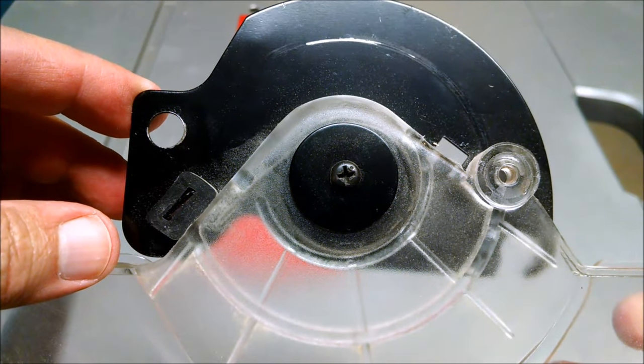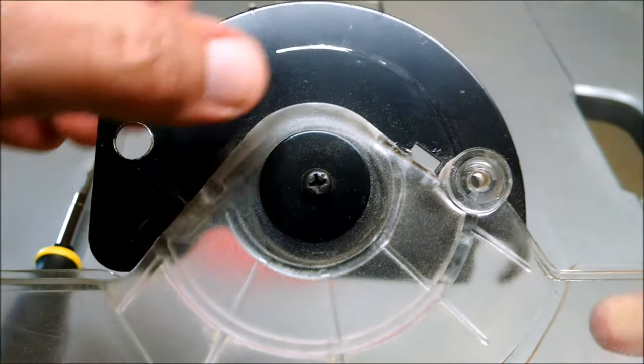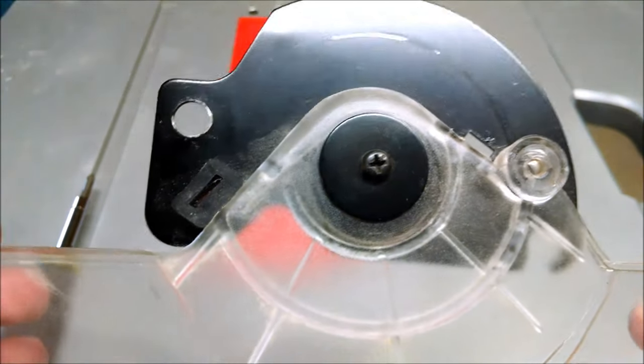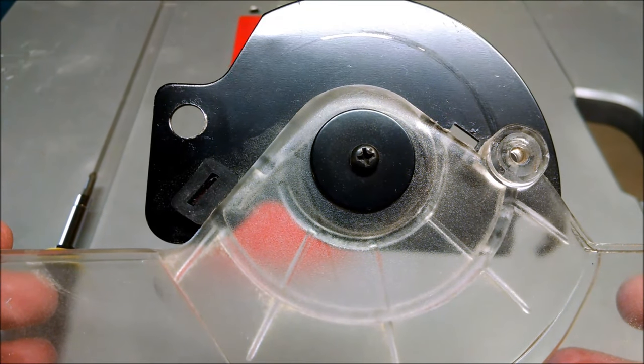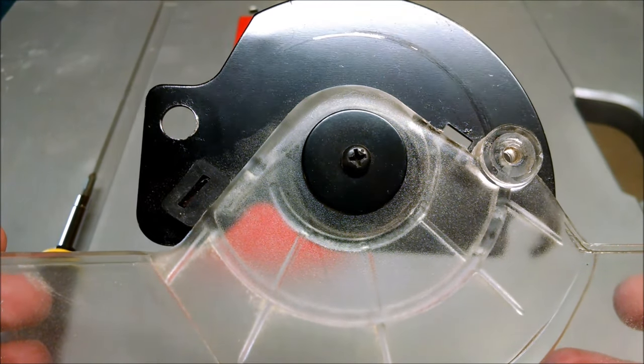So when you put it all back together you just have to make sure that this arm and this arm are under the tab and pre-loaded so that you already have some spring tension against the guard. That's as much as I can tell you.